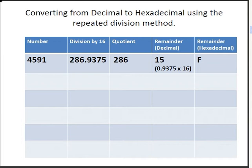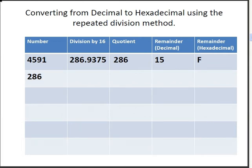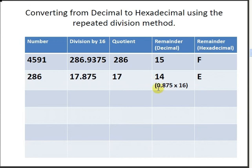Now we move on to the second row. We bring down the quotient, 286, and divide that by 16. We get 17.875. The quotient is the integer part, so we have 17. The remainder is 14 — that is 0.875 times 16. The hexadecimal equivalent of 14 is E.